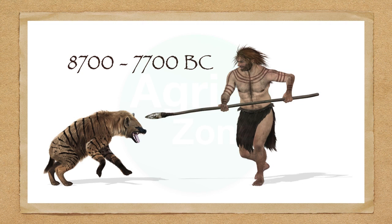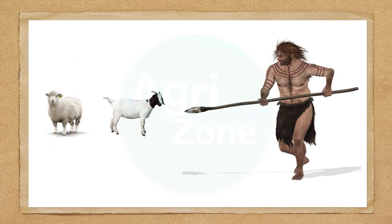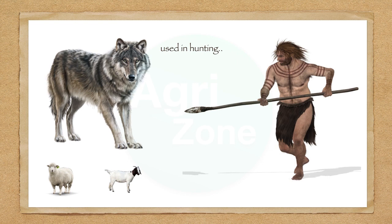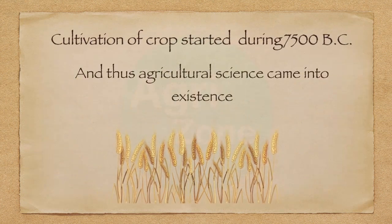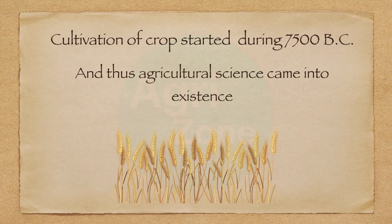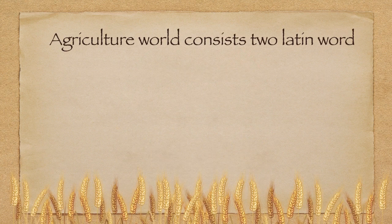During the period of 8700 to 7700 BC, they started to pet sheep and goats. The first pet animal was a dog, which was used in hunting. The cultivation of crops started during 7500 BC, and thus modern agricultural science came into existence.